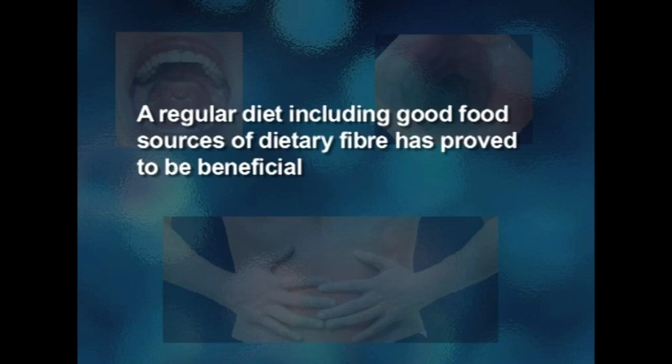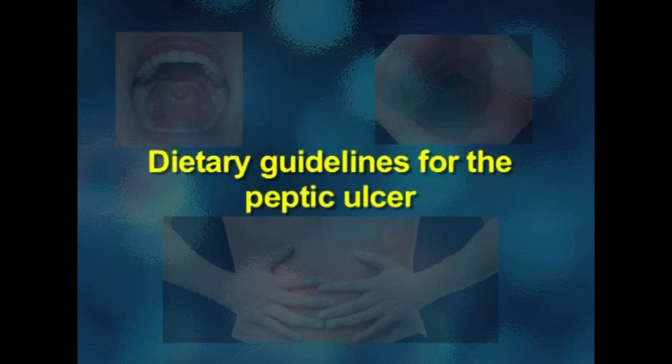Certain foods traditionally forbidden include strongly flavored vegetables such as cabbage, cauliflower, onions, and turnips, and fried foods. A regular diet including good sources of dietary fiber has proved to be beneficial. Dietary guidelines for peptic ulcer: whether a patient is on a bland diet or regular diet, he needs to know which foods are needed for a nutritionally adequate diet and the importance of including these daily. The patient should select foods from a wide variety, omitting those known to be distressing. Moderate use of seasonings is permitted.